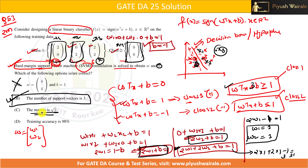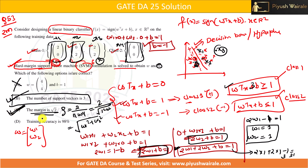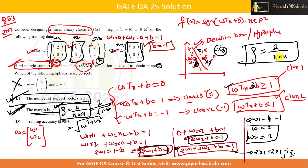For the margin, the formula is ρ = 2 / ||w||, where ||w|| = √(w1² + w2²) = √(1² + 1²) = √2. So ρ = 2/√2 = √2. Option C — margin is √2 — is also correct. Remember this formula: ρ = 2 / √(w1² + w2² + ...).